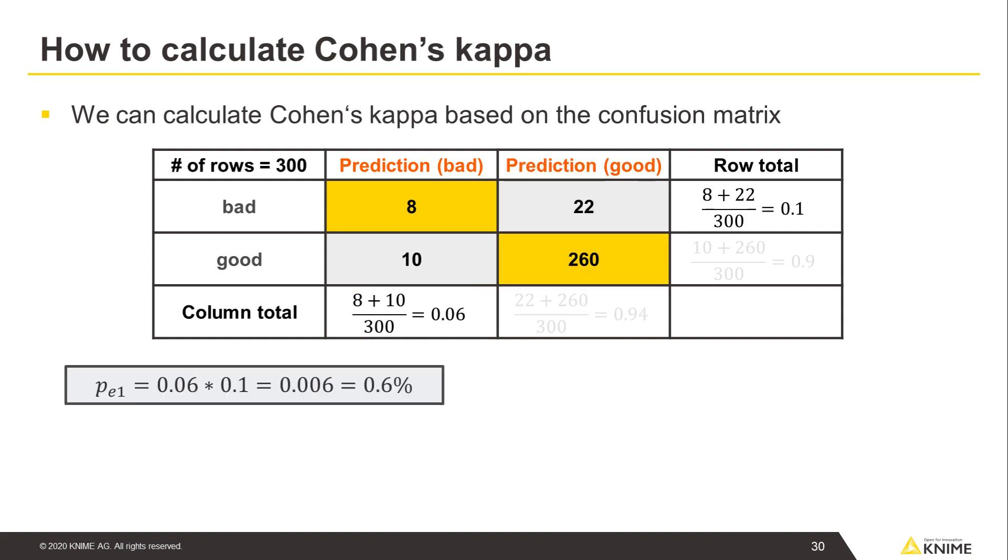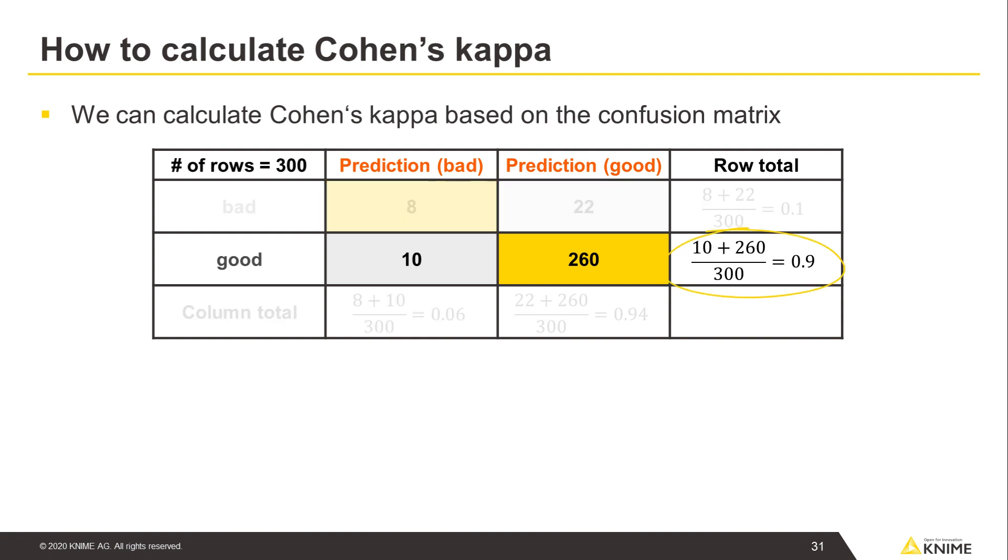If we multiply these two probabilities, we see that the actual and predicted classes are both bad with less than 1% just by chance. Here in the bottom row total value, we see the a priori probability of the class good, 90% in our case.